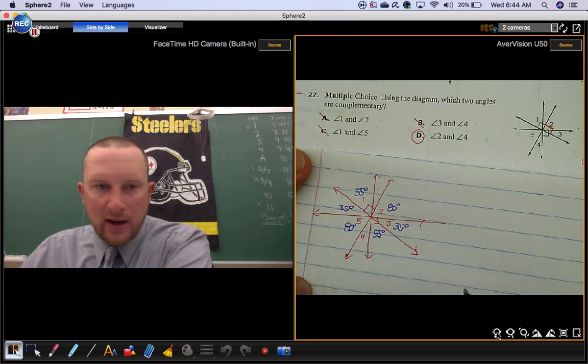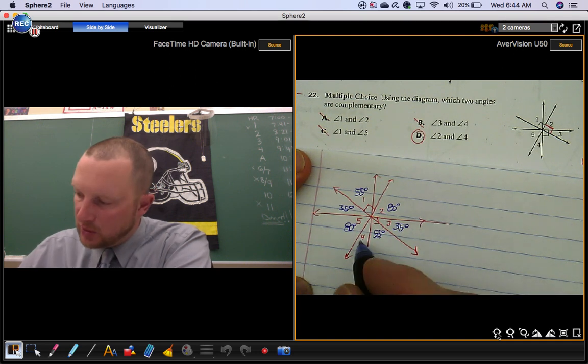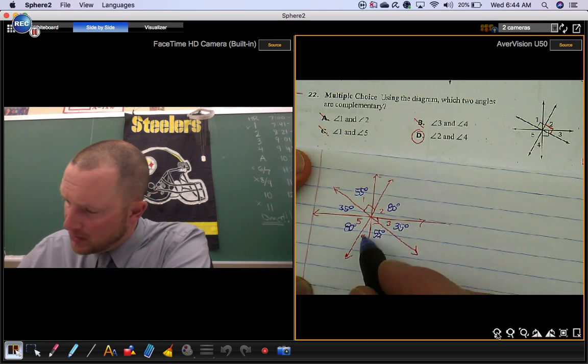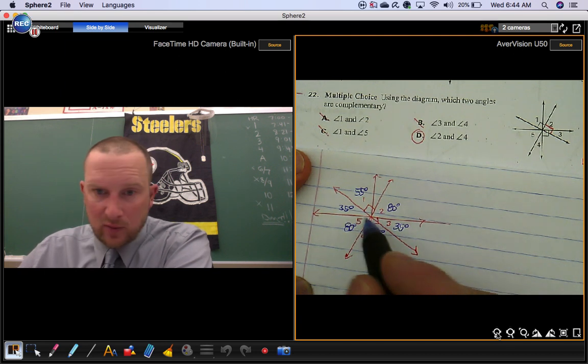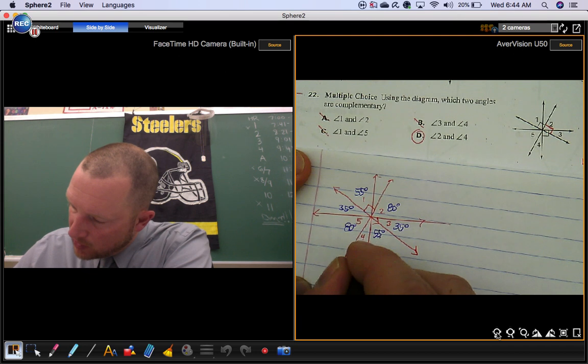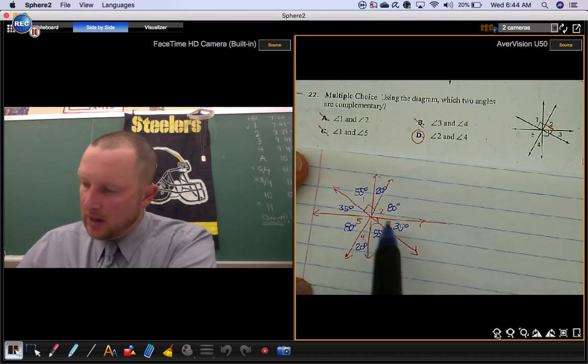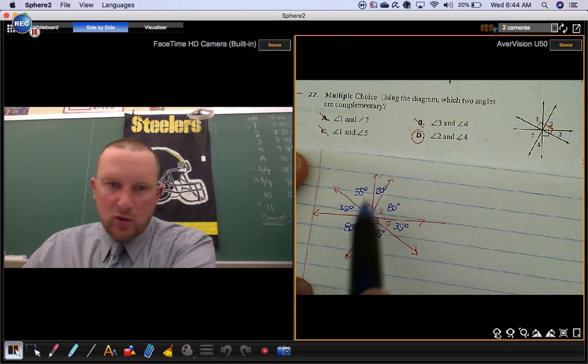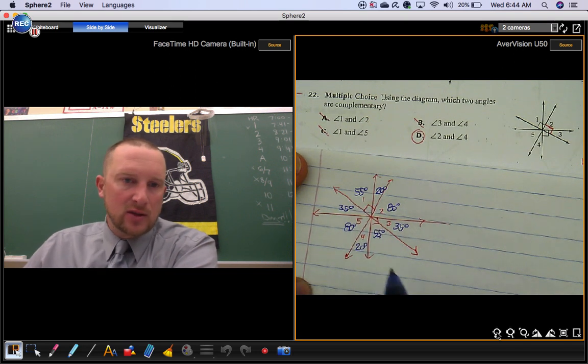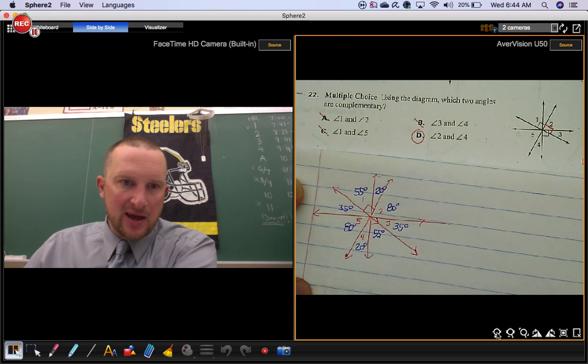We have one more angle to assign a number to, and that's angle four. And we're not really assigning a value to it because angle four and angle five are complementary as well. So angle four is 20 degrees. Now, at this point, assigning one or two arbitrary values here, you can calculate the rest of them. So now you can see the relationships that they have.